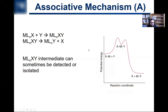The associative mechanism is kind of what it sounds like. Instead of losing a ligand first, you gain the incoming ligand, so the coordination number increases by one. Sometimes you can detect this intermediate with an increased coordination number, and if you can, that's great proof that you have an associative mechanism. Then from that higher-coordination associative complex, X leaves to give your final product.